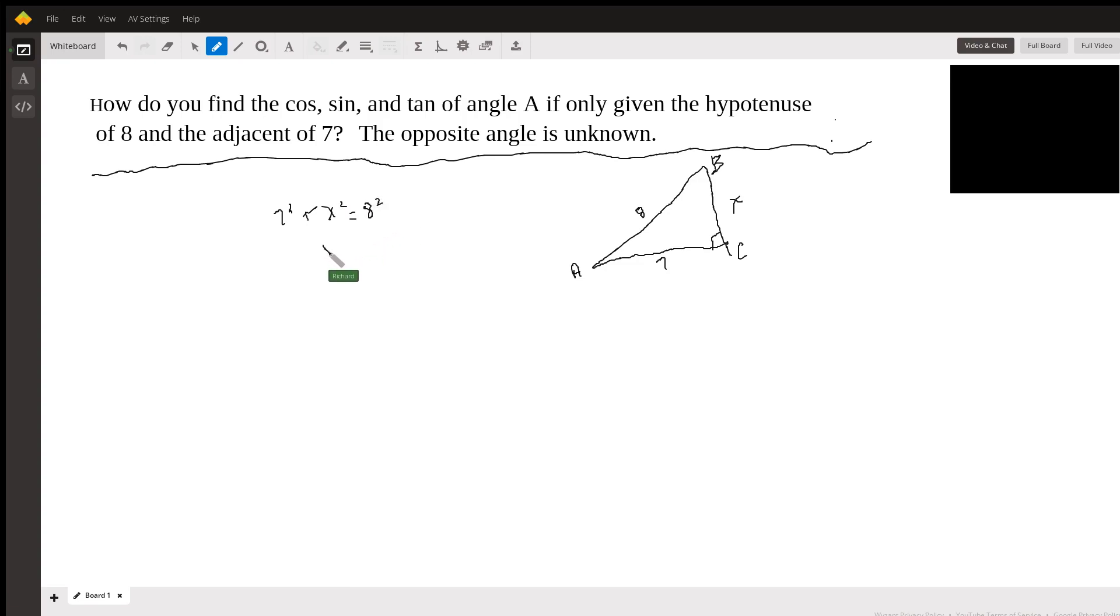And then solve X squared is going to be 64 minus 49, which is 15. So this X is going to be the square root of 15. I think that was giving the students some trouble.